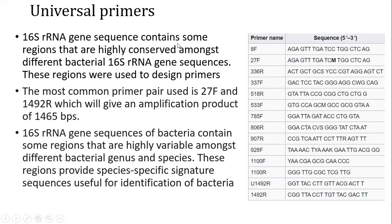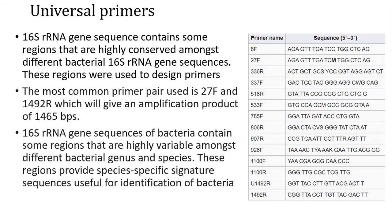Within the 16S rRNA gene sequences, there are some regions which are highly conserved among different bacterial 16S rRNA gene sequences, and these regions are used to design primers. These primers are known as universal primers as they can be used for amplification of the 16S rRNA gene sequence of any bacterial species. Based on the similarity of these conserved regions, here is a list of universal primers that have been designed. 27F and 1492R are the most commonly used primer pairs for amplification of a 16S rRNA gene product of 1465 base pairs.